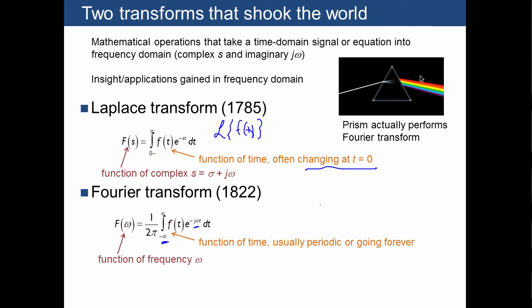The prism shows you what the frequency content is of the original signal being given as input. So the Fourier transform also takes some signal and produces a transformation into different frequencies.